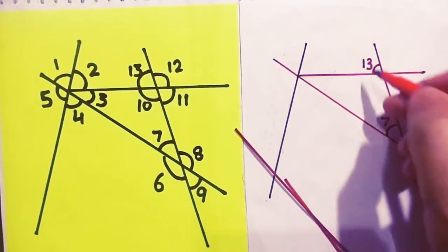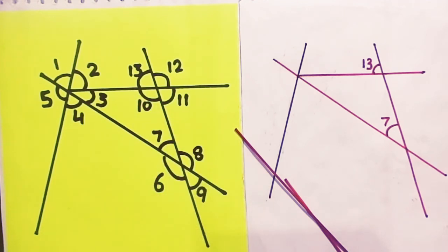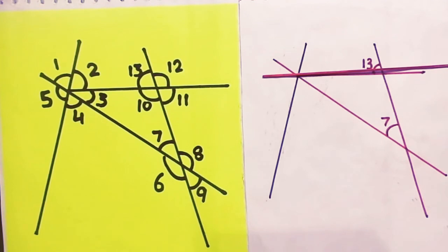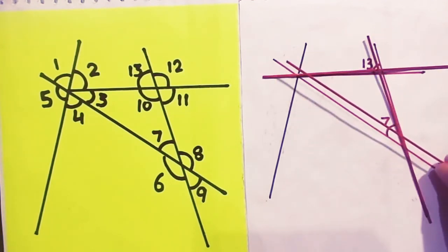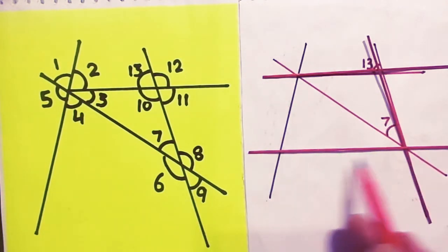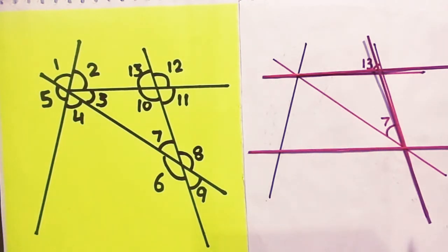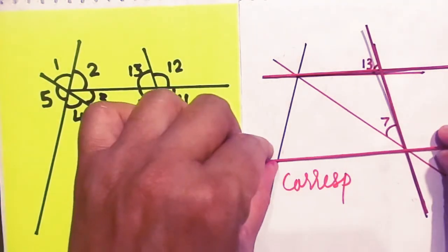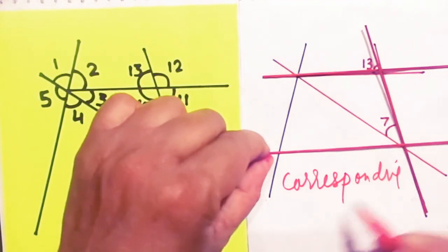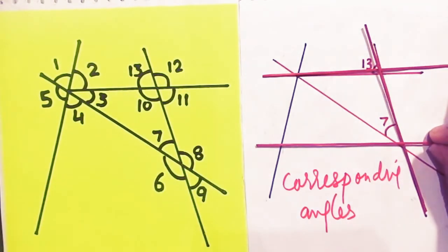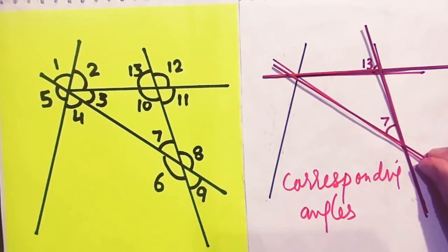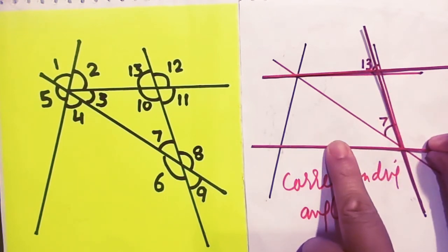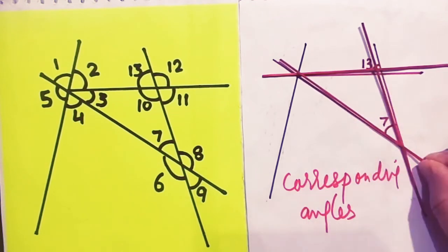You are being asked about angles 13 and 7. These two angles are made by two lines being intersected by a transversal. They are corresponding angles. In order to confuse you, they have tilted the line somewhat like this — but 13 and 7 remain corresponding angles. So you needn't get confused.